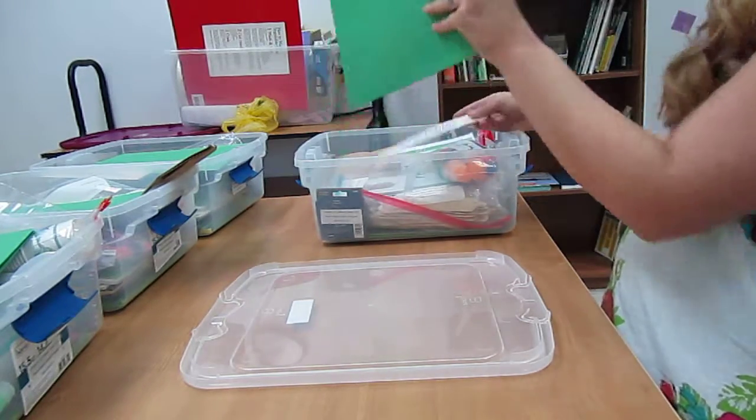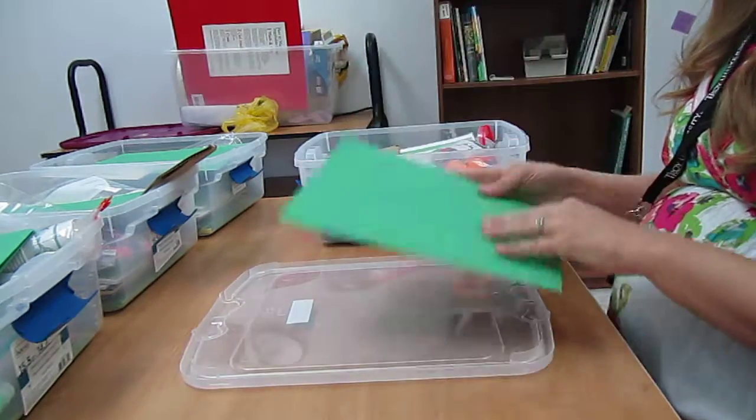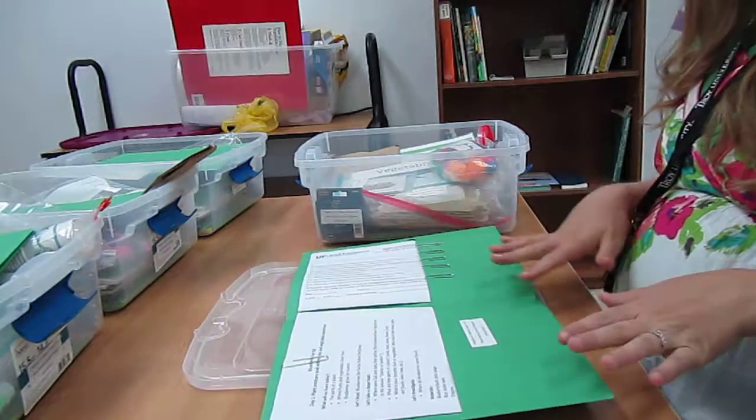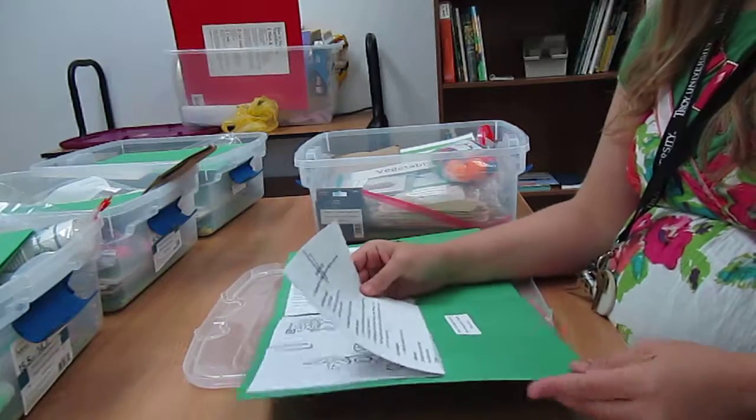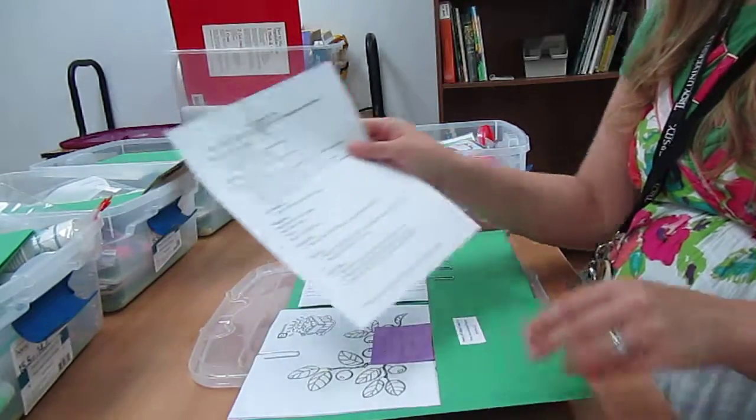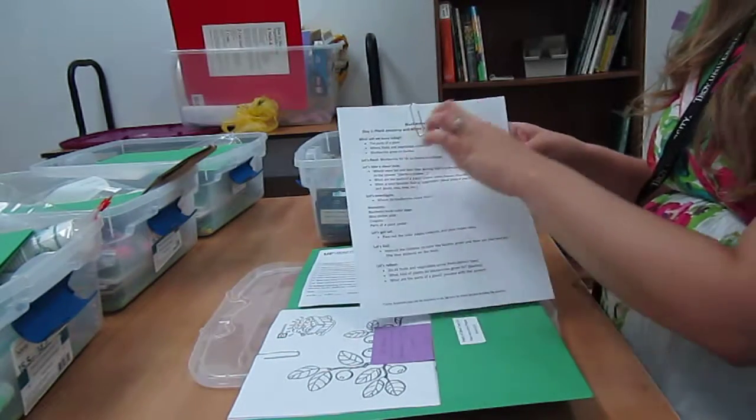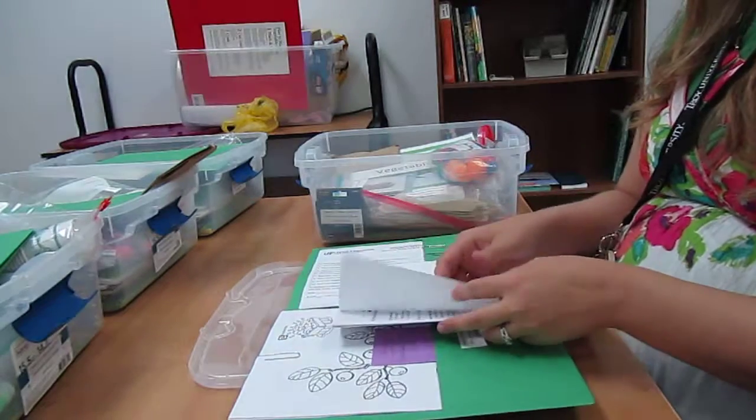When you open the kit the first thing you do is pull out the green folder. In this folder you will find a few things. Your lesson plans day by day are on the left hand side. They say Blueberries for Sale, day one and what you're going to be learning. Then you can see it's day two,